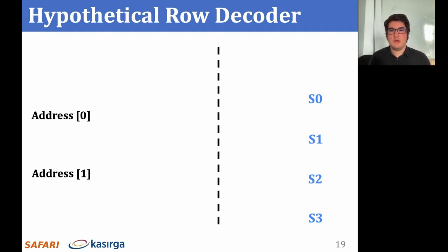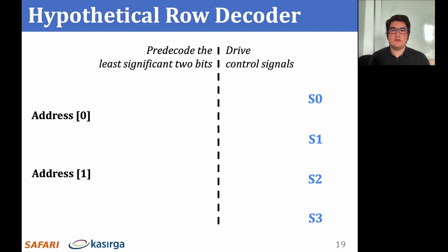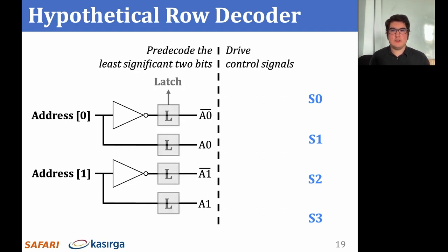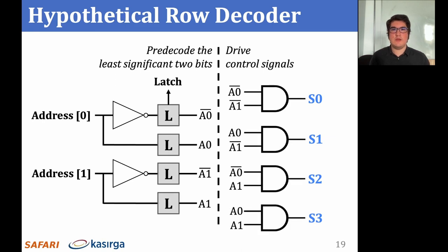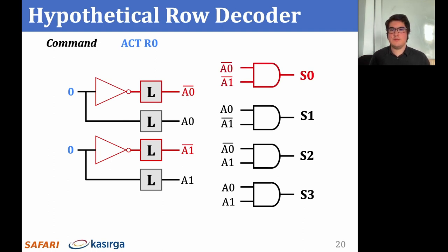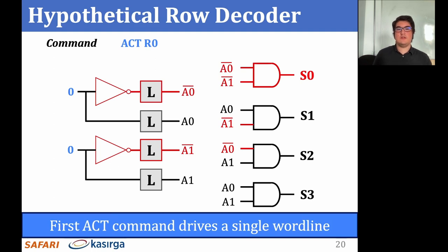We will look at how the DRAM row decoder might be setting these control signals to enable QUAC in real DRAM chips. Our hypothetical decoder operates on the least significant two bits of the row address signal to set the control signals that drive the local wordlines. The decoder logically operates in two steps: first, it pre-decodes the least significant two bits to form certain intermediate signals; then, it combines these intermediate signals to drive the control signals. The pre-decoder outputs the least significant two address bits along with their inverses and latches these signals. The row decoder combines the intermediate signals using two-input AND gates. When the first activate command to row 0 is executed, this decoder drives a single local wordline.